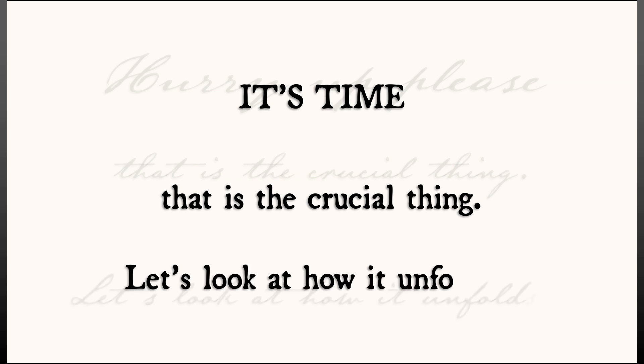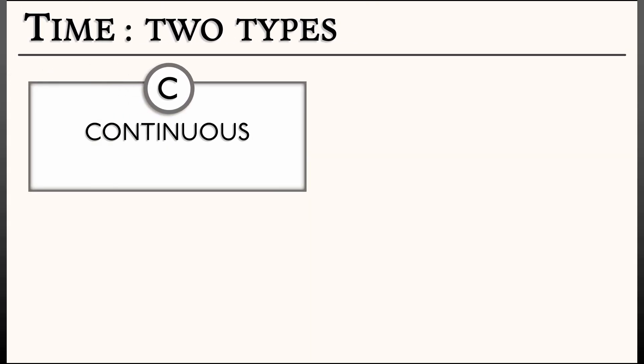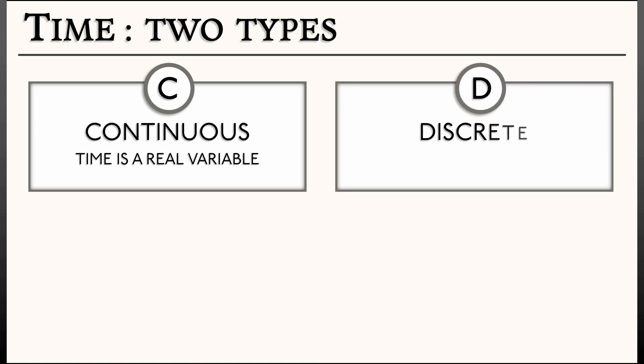One of the things we're going to learn is that there are really two types of time in dynamical systems. The first being continuous time, where time is a real variable. This is contrasted with discrete dynamical systems, where time is a discrete variable or, if you like, an integer variable.